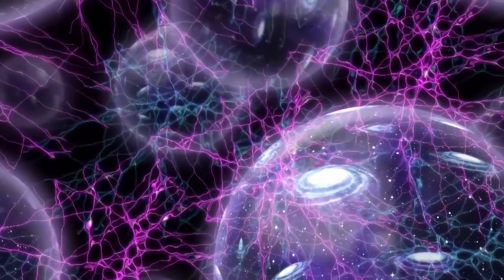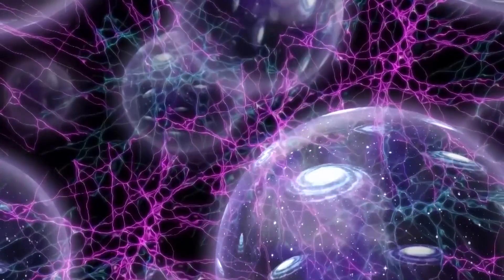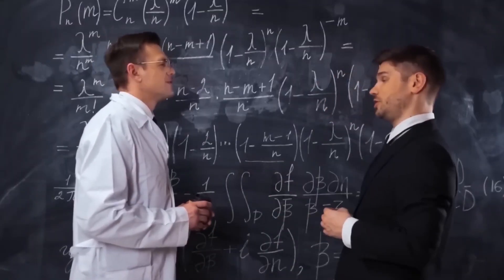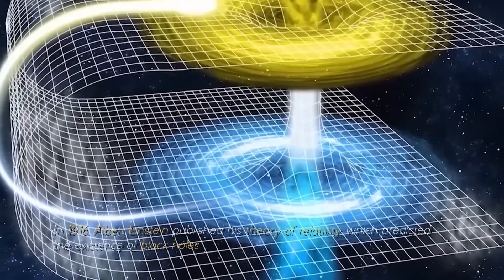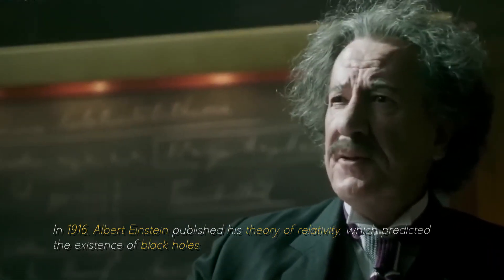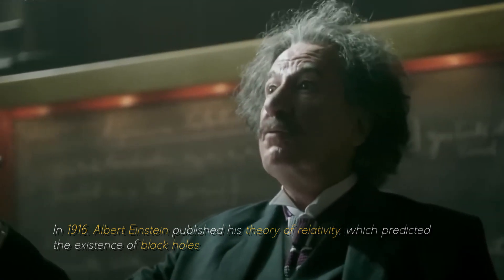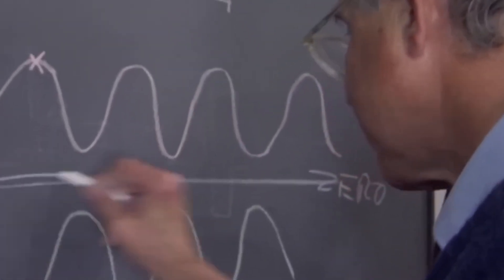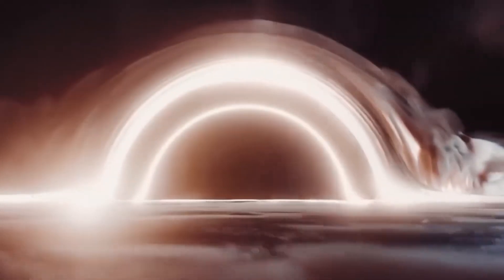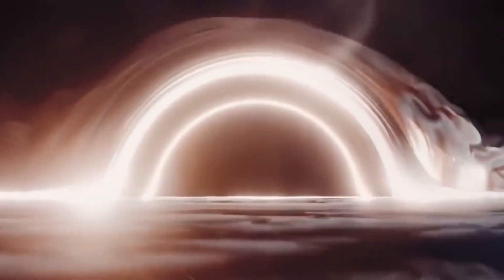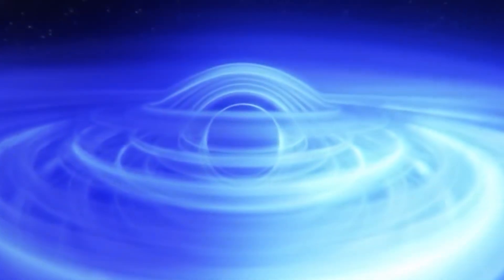Although many of us have a general idea of what black holes are, there are still some gaps in our knowledge. In 1916, Albert Einstein published his theory of relativity, which predicted the existence of black holes. At that time, the concept of black holes was purely theoretical. It was necessary to wait another 50 years for the scientific community to find evidence of their existence.